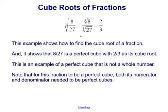This example shows how to find the cube root of a fraction and confirms that 8 over 27 is a perfect cube with 2 thirds as its cube root — an example of a perfect cube that is not a whole number. For a fraction to be a perfect cube, both the numerator and denominator must be perfect cubes. It wouldn't work with the cube root of 26, 28, 7, or 10 in the numerator — they had to be perfect cubes.